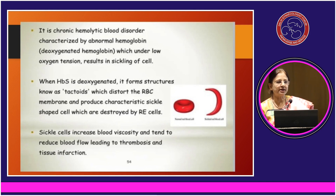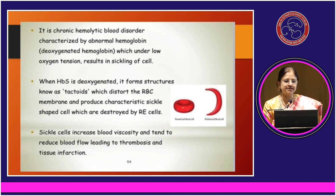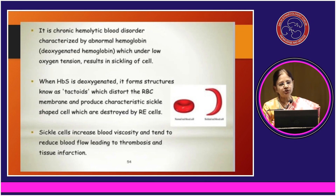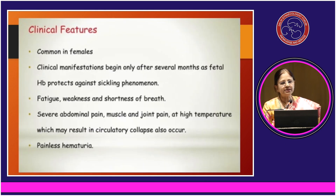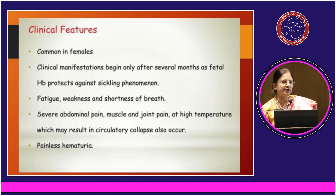It is a chronic hemolytic blood disorder where, under low oxygen tension, hemoglobin S causes sickling of the cells. When deoxygenated, it forms structures called tactoids, which distort the RBC membrane and produce characteristic sickle cells that are destroyed by the reticuloendothelial system. Sickle cells also increase blood viscosity and reduce blood flow, leading to thrombosis and tissue infarction. Clinical manifestations begin after about 6 months of age because fetal hemoglobin HbF is a protecting agent against sickling — a fact used in treatment.